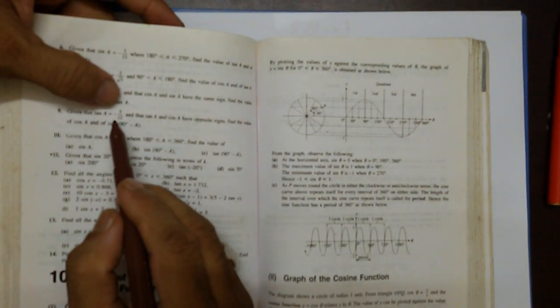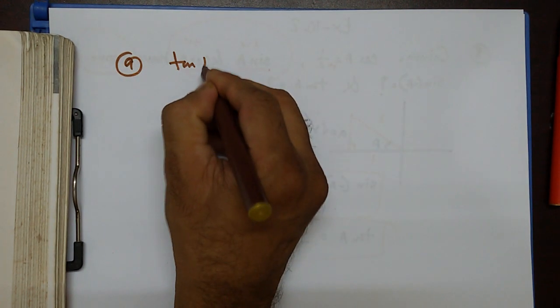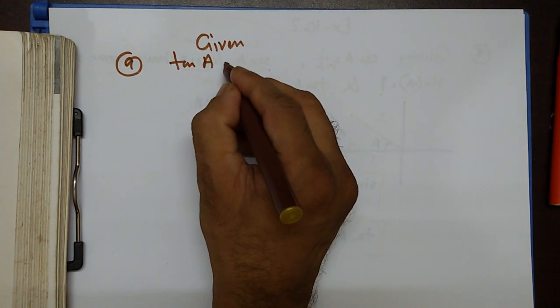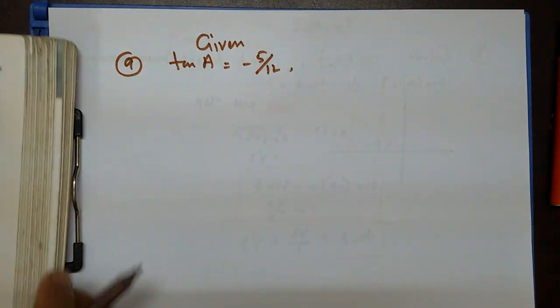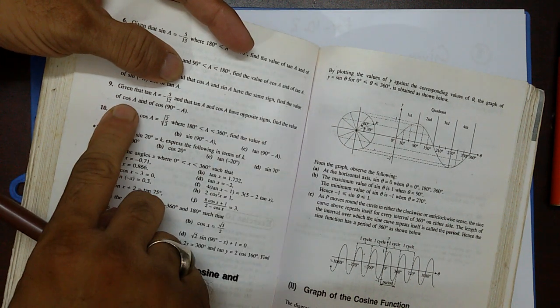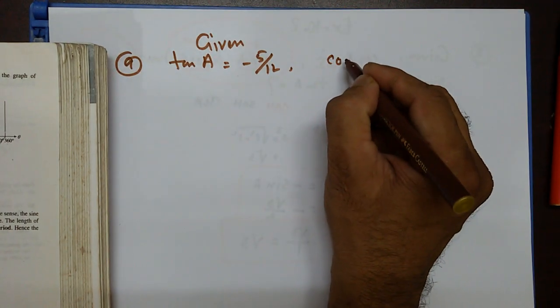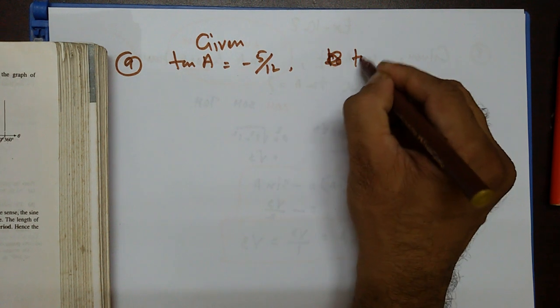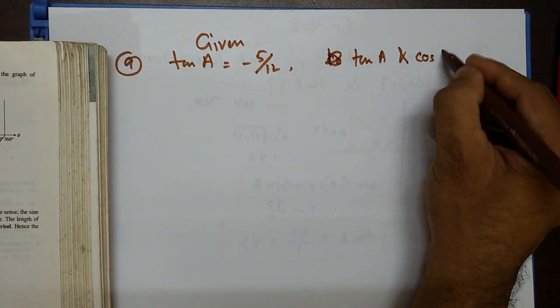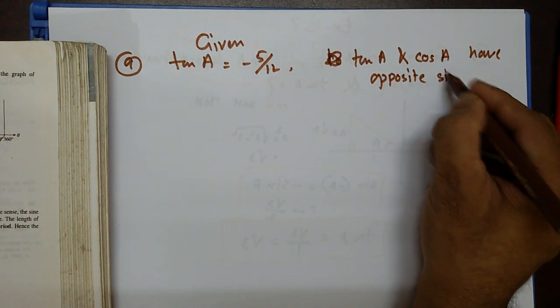Now let's do number nine. Question nine says: given that tan a equals negative five over twelve, and that tan a and cos a have opposite signs. Find the value of cos a and cos(90° − a).